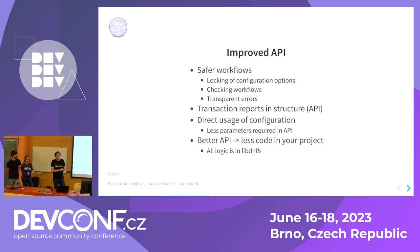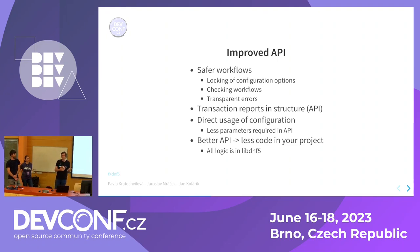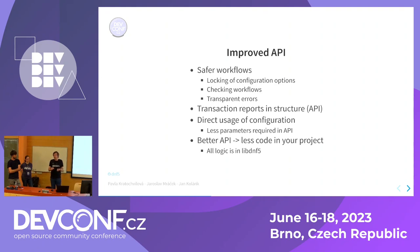When we talk about the improved API that our new library provides, we try to provide a better and safer workflow. If you run things incorrectly, DNF5 should alert you, stop you, and explicitly say you are doing things wrong and should call things in a different order. We have experienced many reports from users saying it doesn't work, and the simple answer was they ran things not according to the documented workflow.